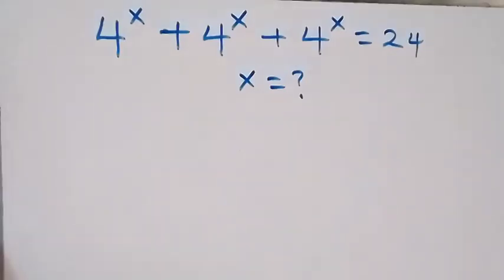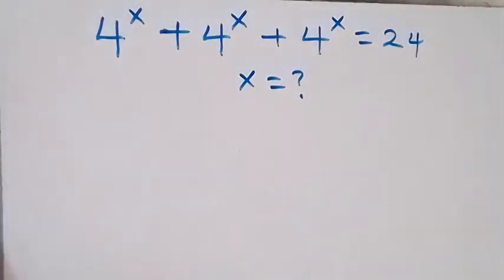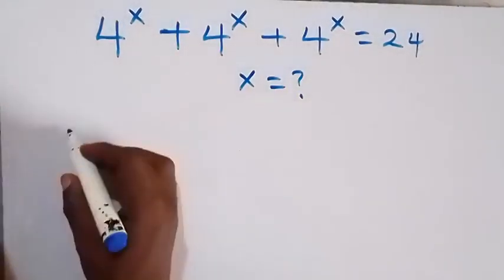Hello, you are welcome. How to solve this nice exponent problem: we have 4^x + 4^x + 4^x = 24, and from here we can factor 4.